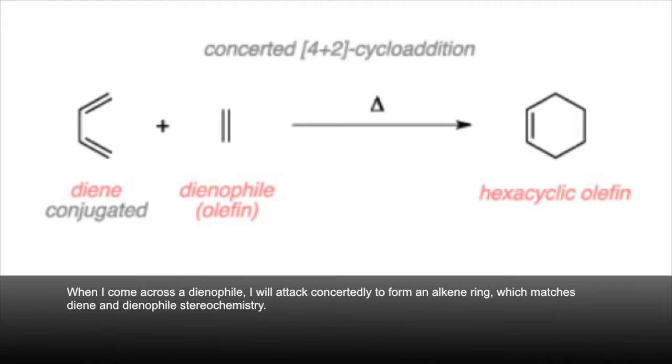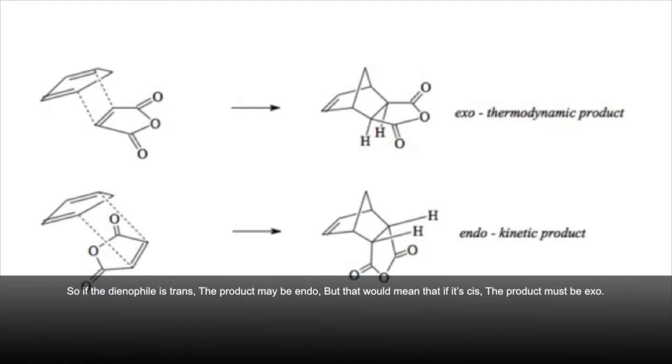When I come across a dienophile, I will attack concertedly to form an alkene ring which matches diene and dienophile's burial chemistry. So if the dienophile is trans, the product may be endo, but that would mean that if it's cis, the product must be exo.